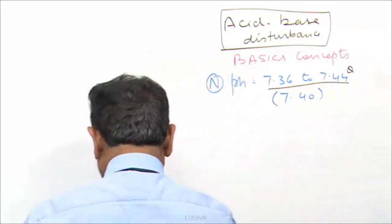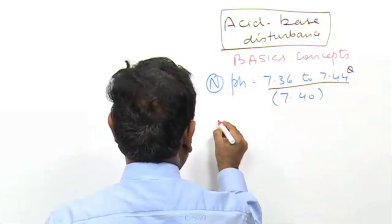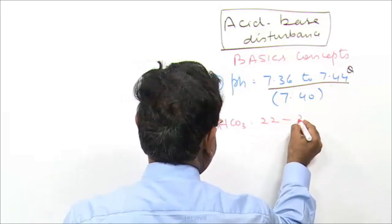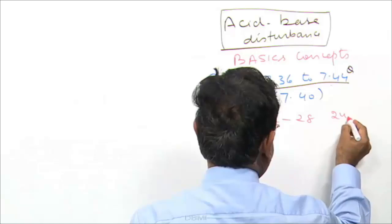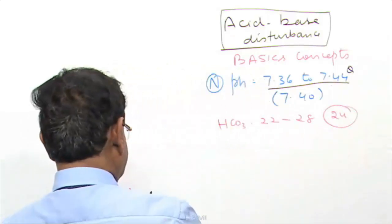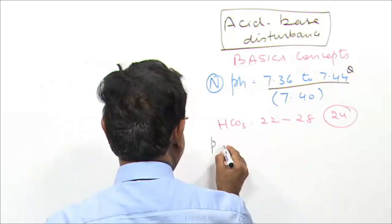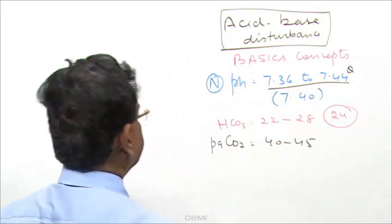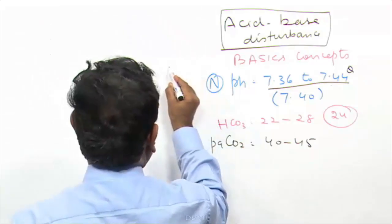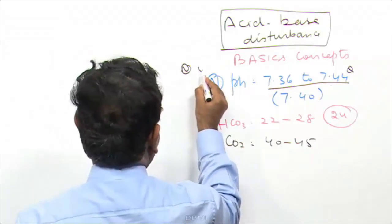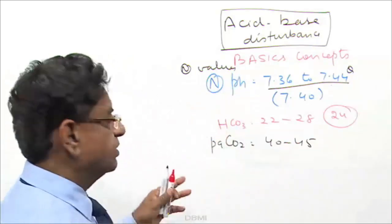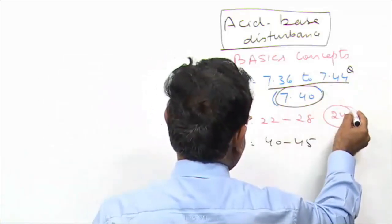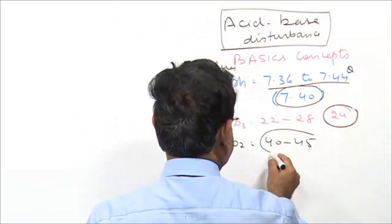Let us go more into basics. The normal bicarbonate is 20 to 28, and for easy calculation I am taking 24. And the normal CO2 is 40 to 45 mmHg. So what we have to remember: first value is 7.40, second is 24, and third is 40 to 45.